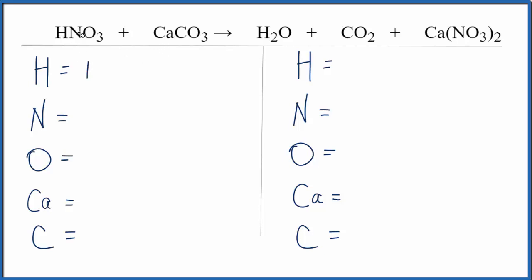We have one hydrogen, we have one nitrogen, three oxygens, plus these three oxygens right here. So we have six total oxygens, one calcium, and then one carbon.